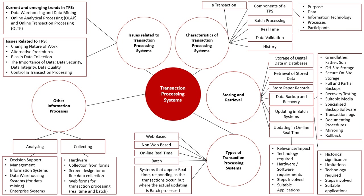Bias in data collection refers to when we look at data retrieved from our transaction processing system — is there any skewing of results? Are we making it look like we made a better profit than we actually did, or ignoring some data to suit a particular purpose rather than reflecting the actual data? Data security asks whether our data is safe: do we back it up regularly, is there virus protection, are there login procedures with usernames and passwords, a firewall on the network, and encryption for online e-commerce so intercepted data doesn't reveal private details?